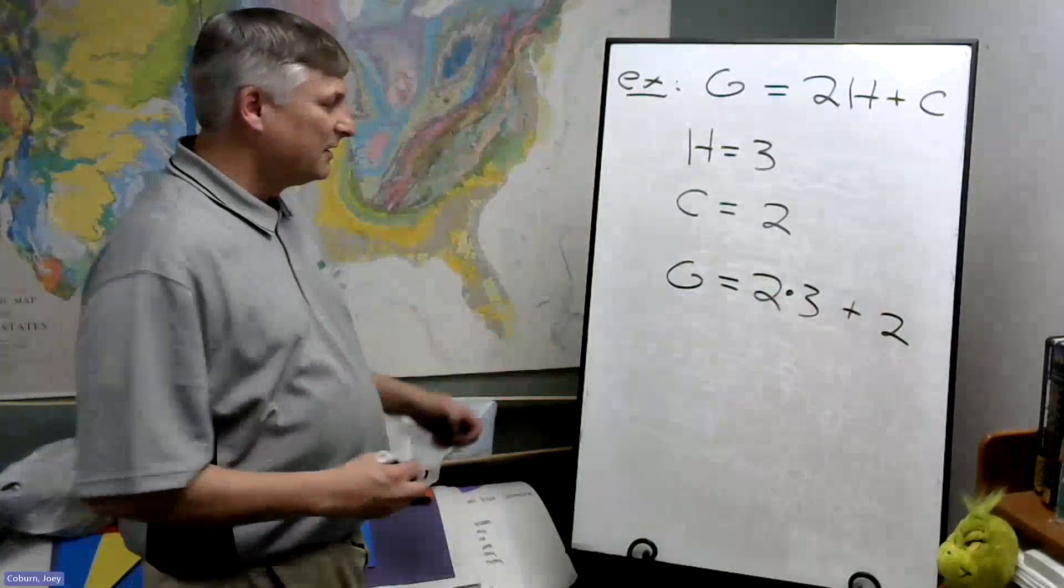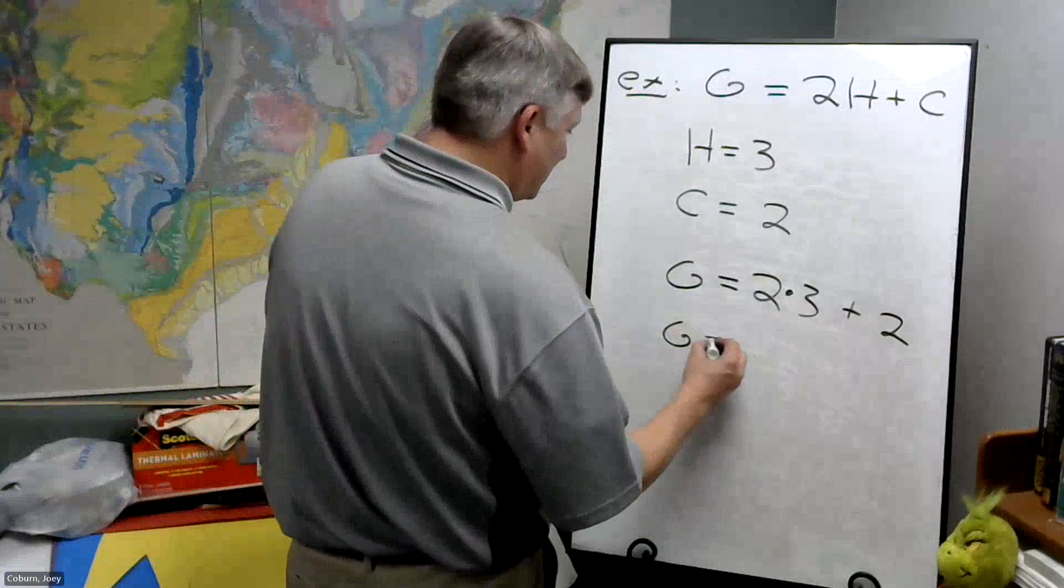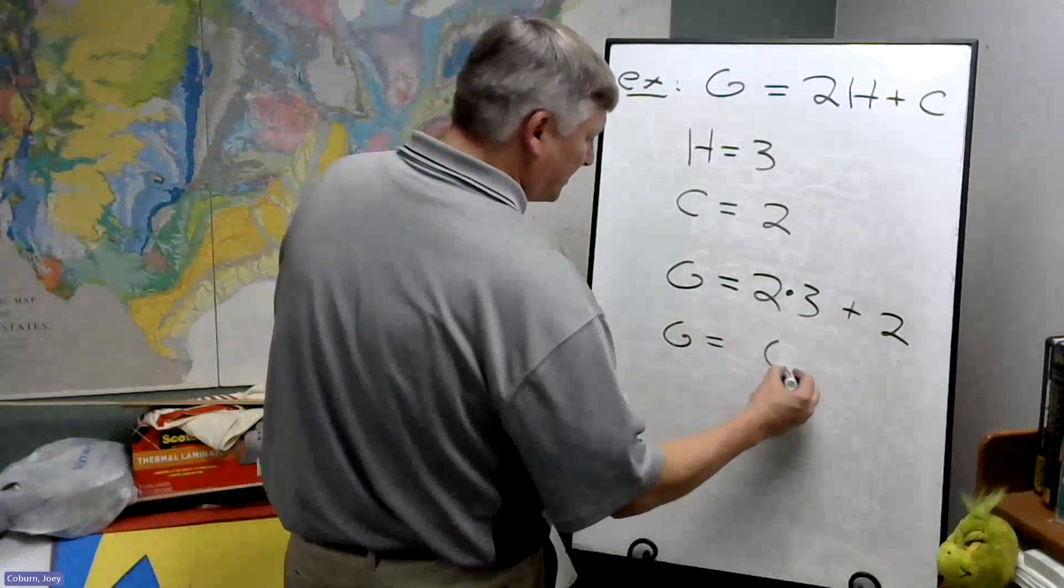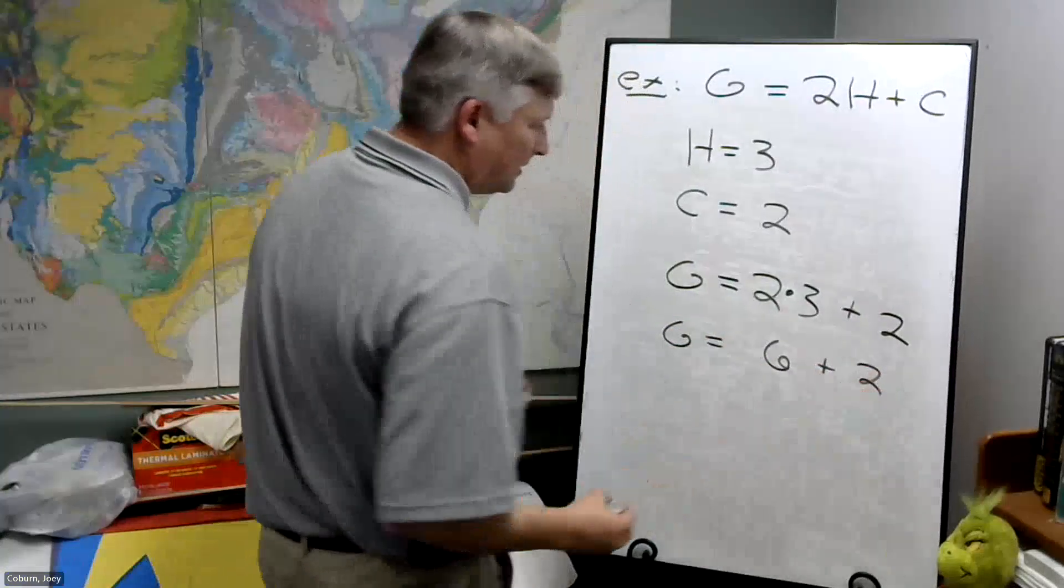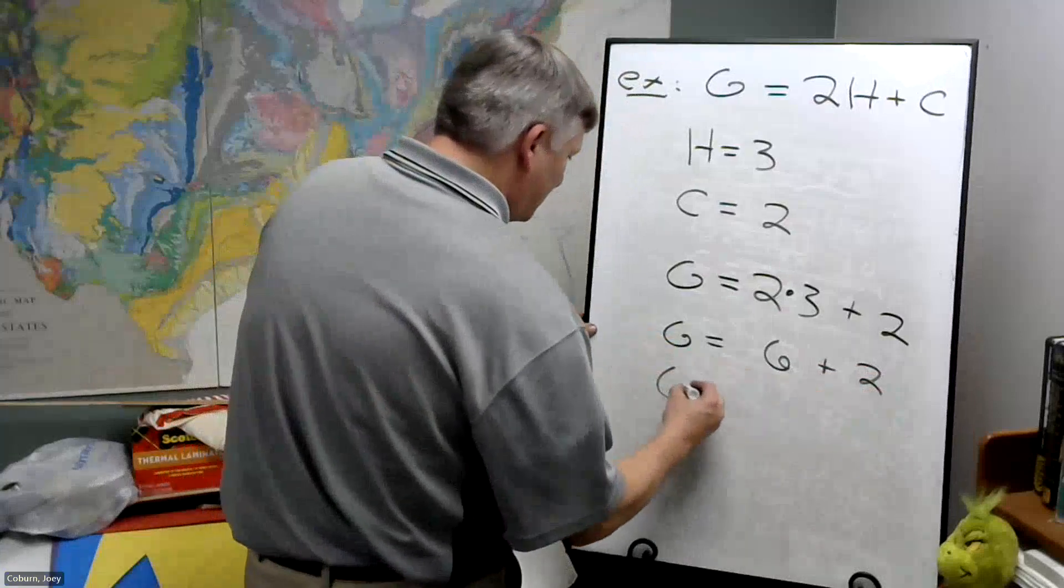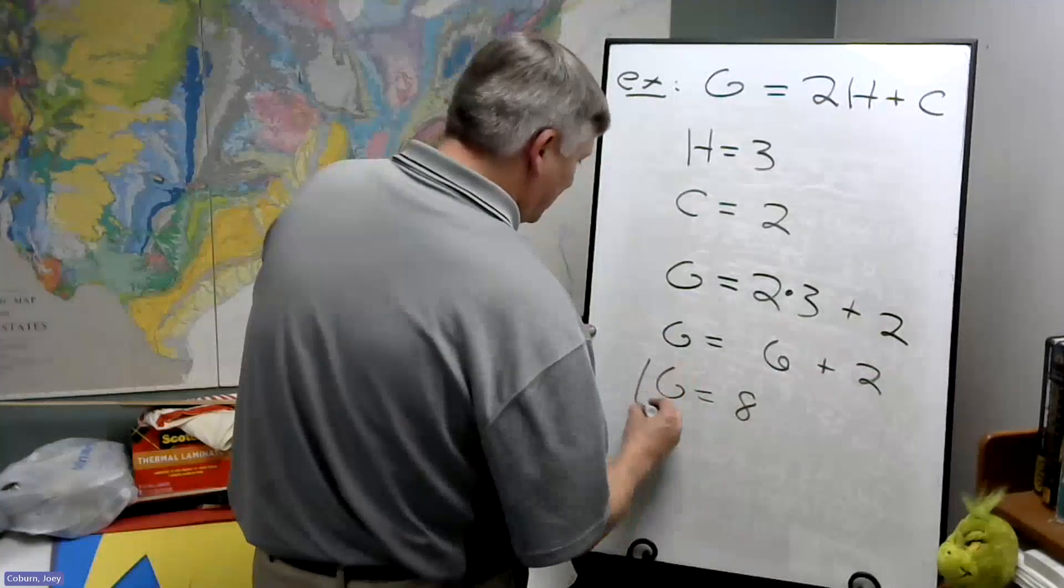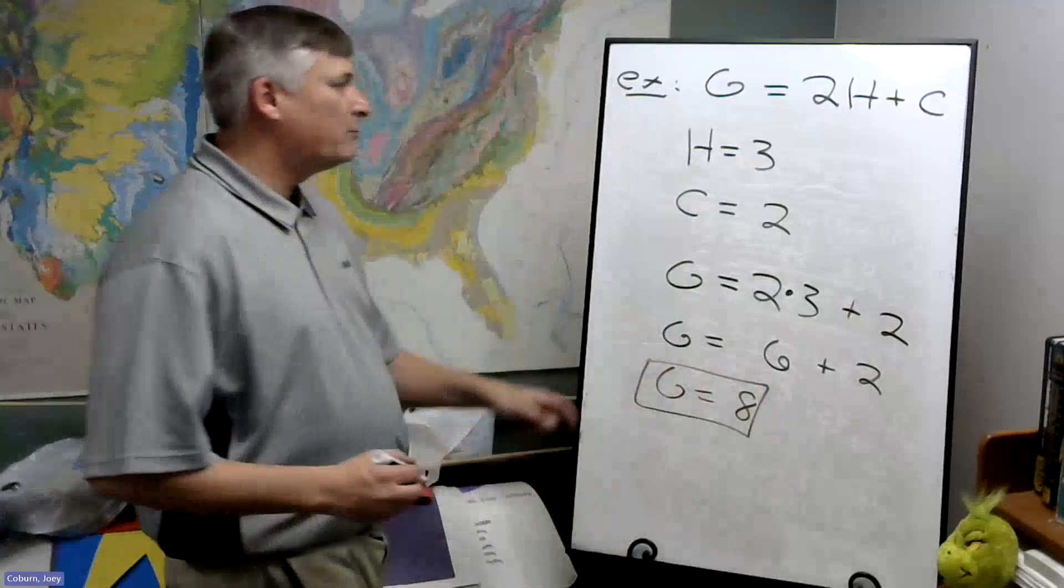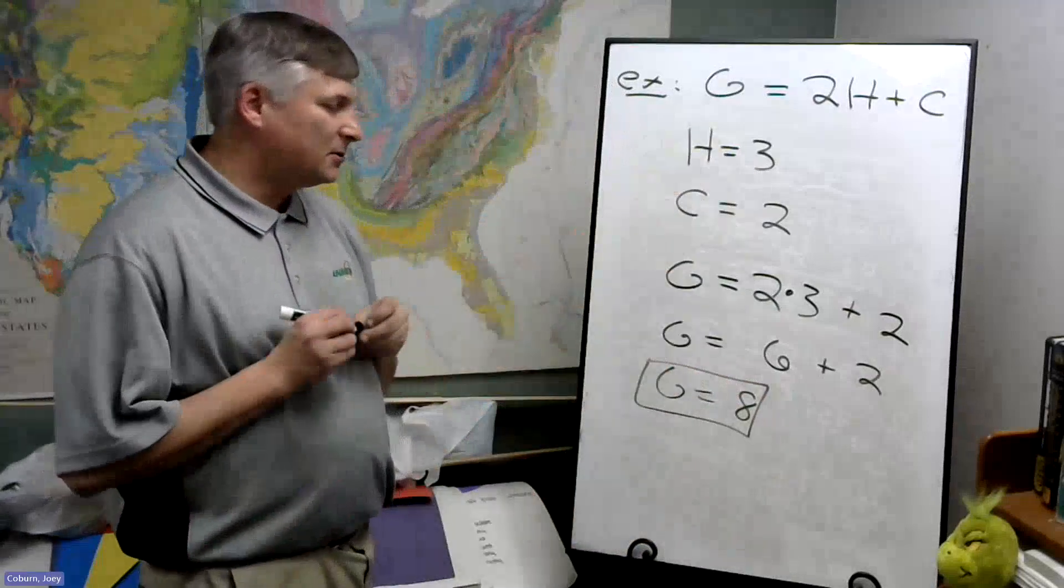So G is, well, 2 times 3 is 6. And then we add the 6 and the 2. We find out G is 8 when we let H be 3 and C be 2.